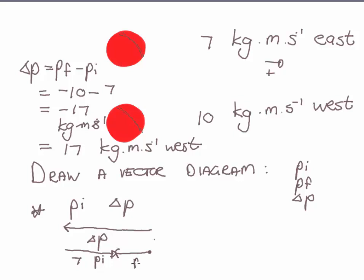We see that we get PF as a line that's pointing towards the left, which means west, and it will have a value of 10 kilograms meter per second or negative 10.